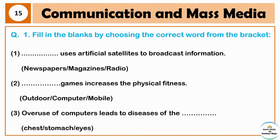Question 1: Fill in the blanks by choosing the correct word from the bracket. Blank uses artificial satellites to broadcast information — newspapers, magazines, or radio. Correct answer is radio. Radio uses artificial satellites to broadcast information. Next: blank games increases the physical fitness — outdoor games, computer games, or mobile games. Correct answer is outdoor games. Overuse of computers leads to diseases of the chest, stomach, or eyes.